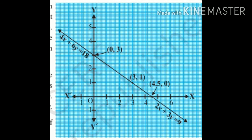Wherever the lines coincide — for example at x = 4.5, y = 0 — all those points are solutions for x and y. Every point where they coincide gives a valid solution for those equations, meaning this pair of equations has infinite solutions.